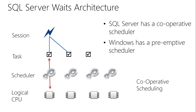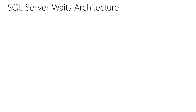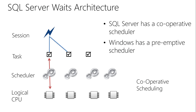We call SQL Server's scheduling mechanism a cooperative scheduler because while the thread running your piece of code is on the CPU, if it doesn't need CPU time anymore — for example, it needs to get some data off disk — it will voluntarily yield its time on the processor to let somebody else have a go. It cooperates with other threads to provide a more efficient execution model.